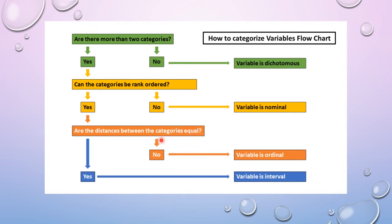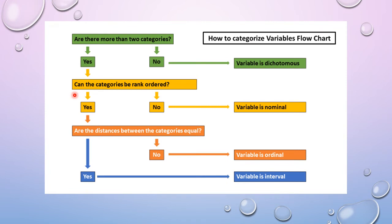The next step is: are the distances between categories equal? If the intervals between scales are equal, we can say the variable is at the interval level. If the distances are not equal, the variable ends up at the ordinal level. This is a simple way to determine the level of your variable. The ratio scale will be explained later.